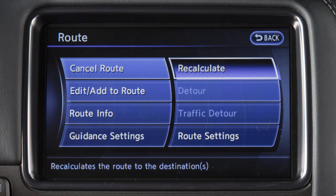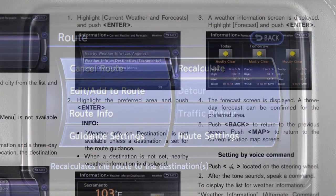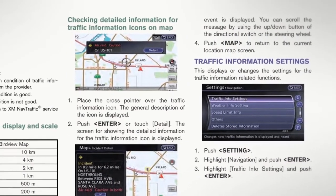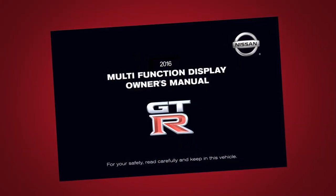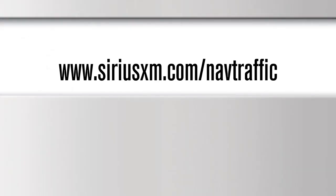Touch recalculate to manually search for the route again after changing search conditions. Touch traffic detour to search for an alternate route based on traffic information. For full details on SiriusXM nav traffic, see your multi-function display owner's manual or visit www.siriusxm.com/navtraffic.